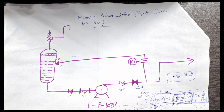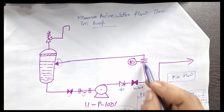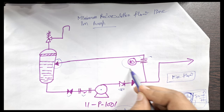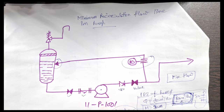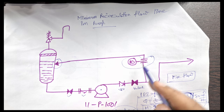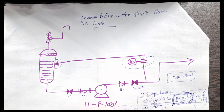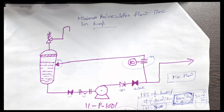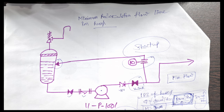What we do is provide one recirculation line back to the vessel, and in this line we provide an RO — a restriction orifice. Please let me know in the comments box why we provide this RO in the minimum recirculation line, and why we provide a valve or control valve in the recirculation line.